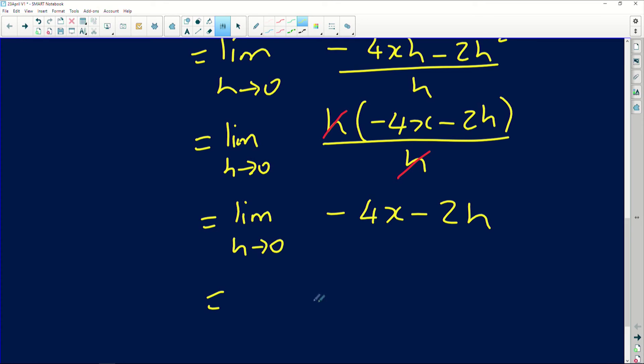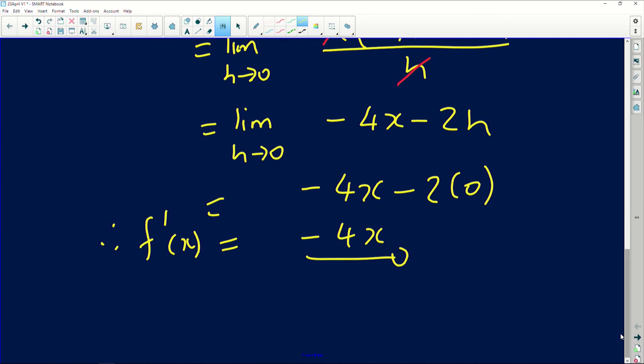I can now put my h as zero and then I'll actually have minus four x minus two into h, which when I simplify, it will amount to negative four x. So in total, that is the derivative. Therefore, f prime of x is equals to negative four x.